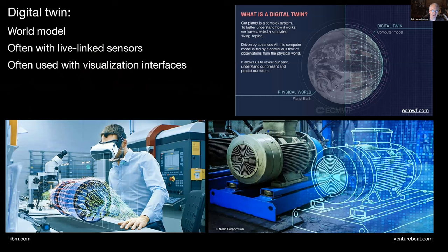This is behind an idea called a digital twin, which comes from mechanical engineering. The idea is you have a world model — which might be parts or a railway corridor — with live-linked sensors pouring data into it. You can visualize it, interact with it, add to it, annotate it, and run simulations. We're starting to play with these ideas.